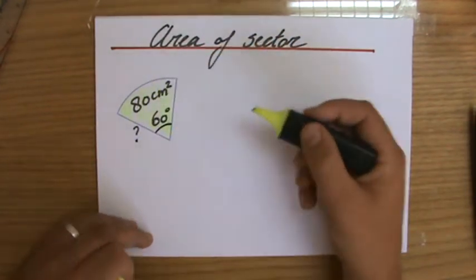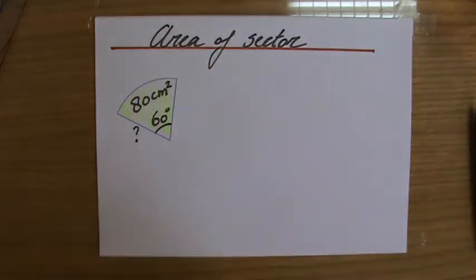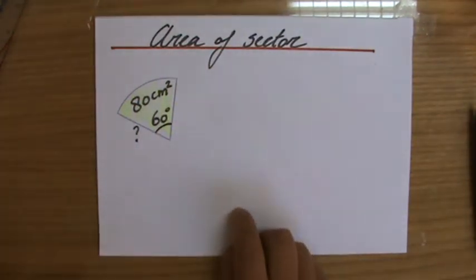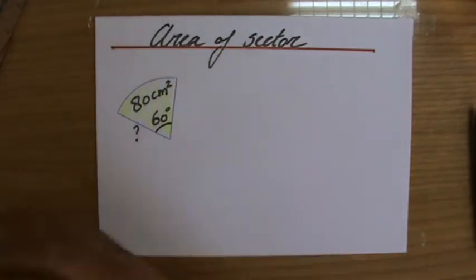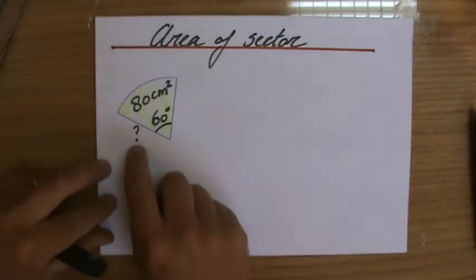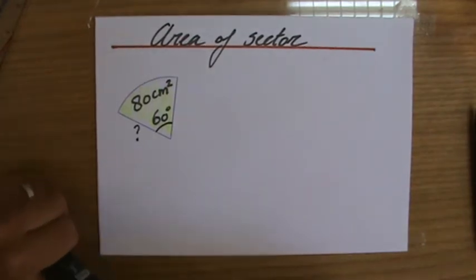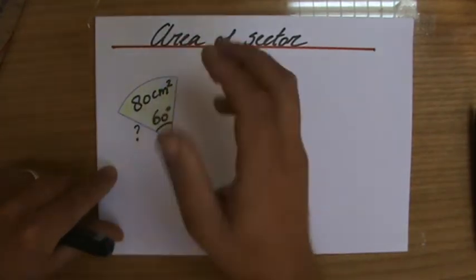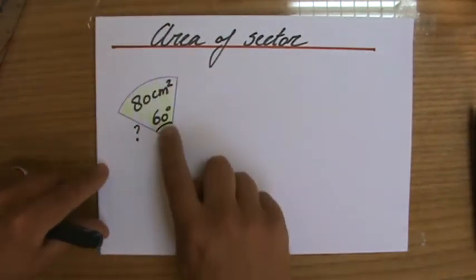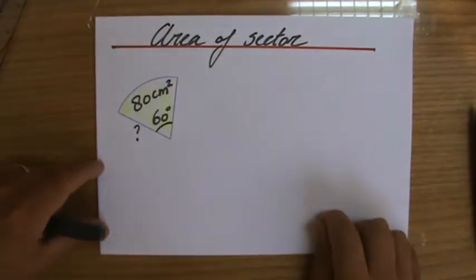So the area of this part equals 80 square centimeters, that angle is 60 degrees, and given the area of a sector, now you're going to find what is the radius for this circle - the radius for the circle which has a sector area of 80 centimeters squared when it's an angle of 60 degrees enclosed by the two radii.